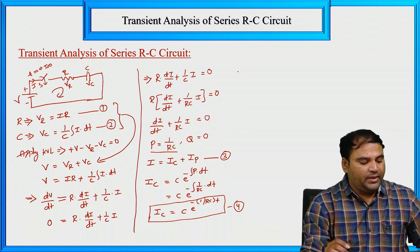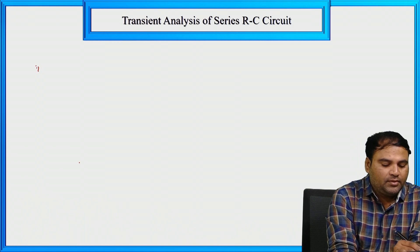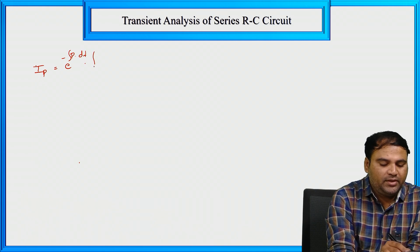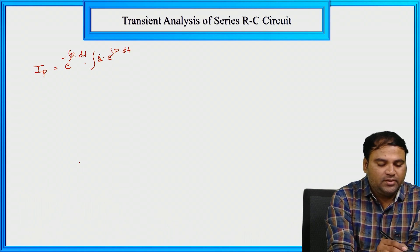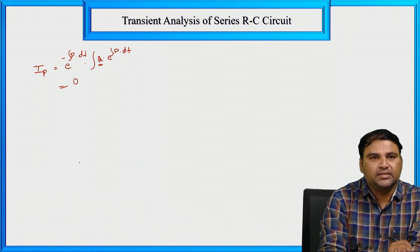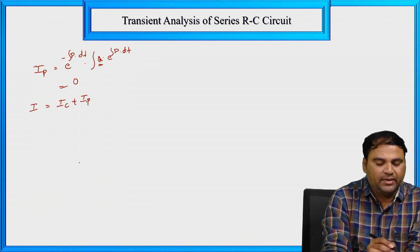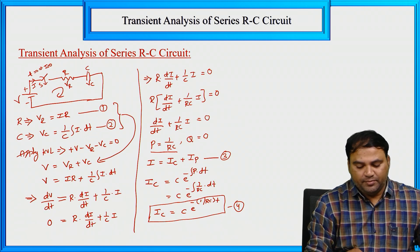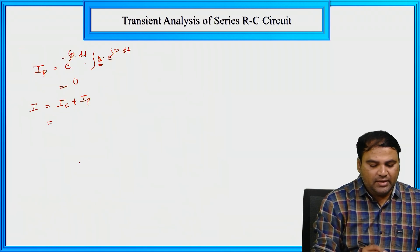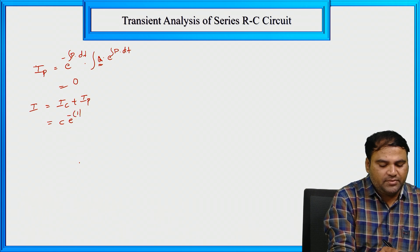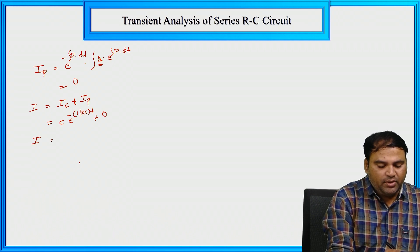Now for IP: IP equal to e to the power of minus integral P dT into integral of Q into e to the power of integral P dT. Since Q value is 0, the total IP value is 0. Therefore current I equal to IC plus IP equal to C into e to the power of minus 1 divided by RC into T plus 0, giving I equal to C into e to the power of minus 1 by RC into T.